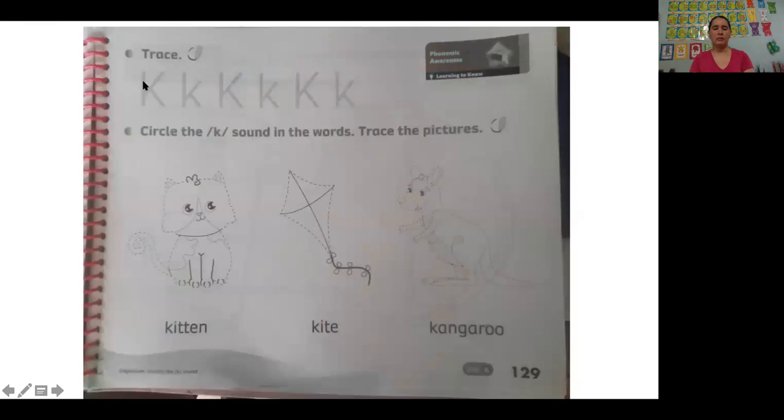Trace the letter K, then you gotta write until when the line finishes, and then circle the K sound in the words, trace the pictures. You're going to circle the sound of the letter K and then trace the pictures. Trazar la letra K, escribirla hasta donde termina la línea, trazar los dibujos y circular el sonido de la letra K.